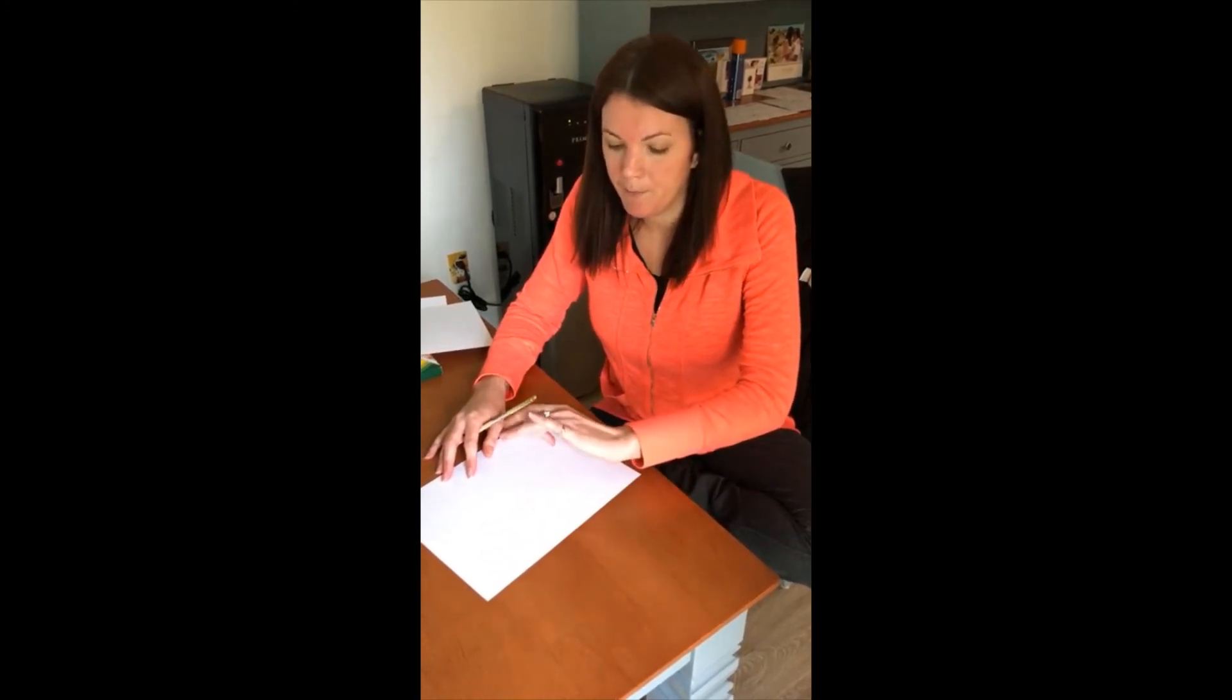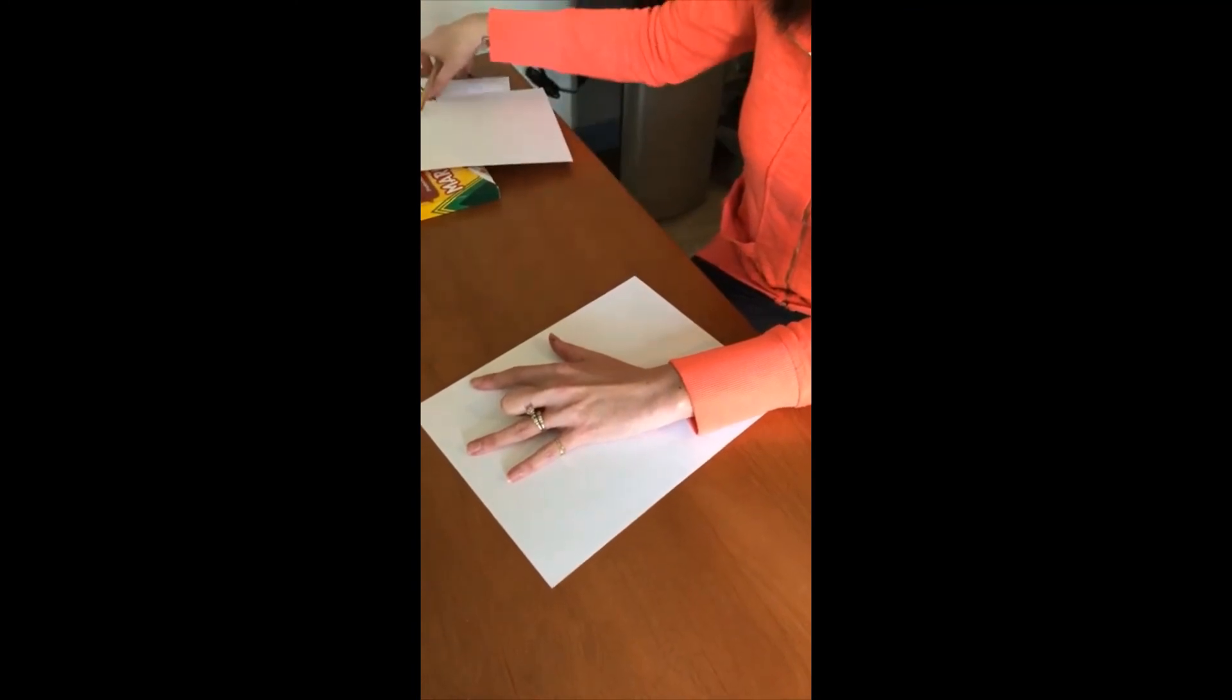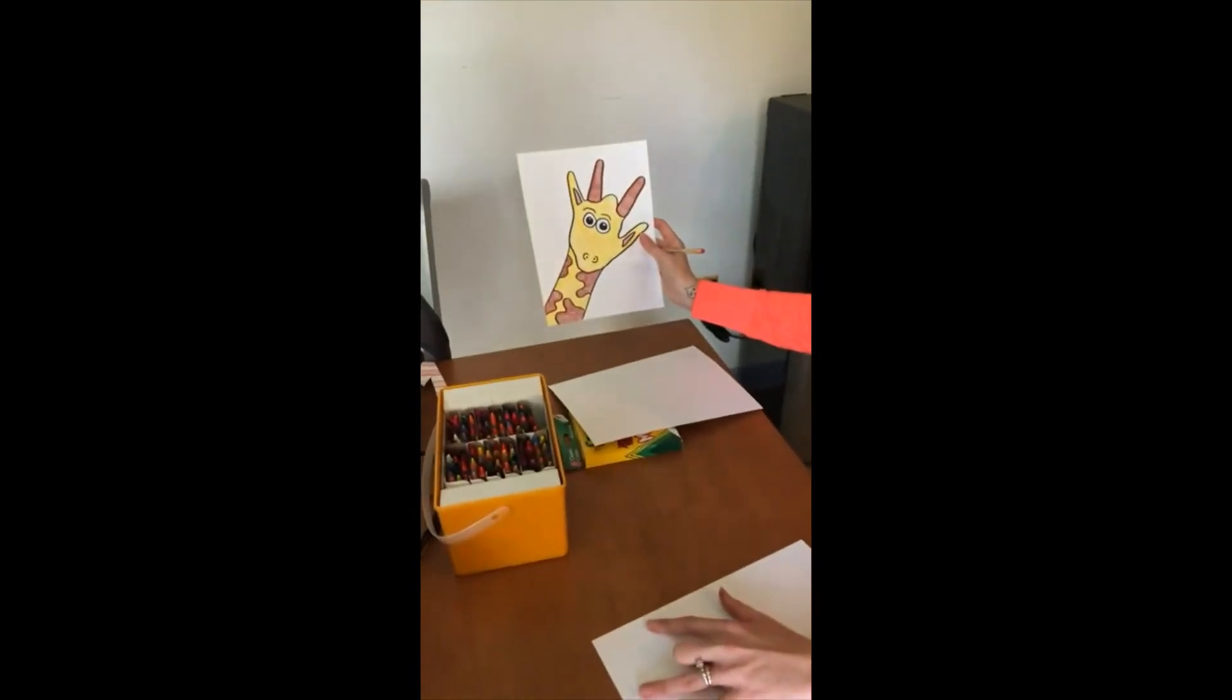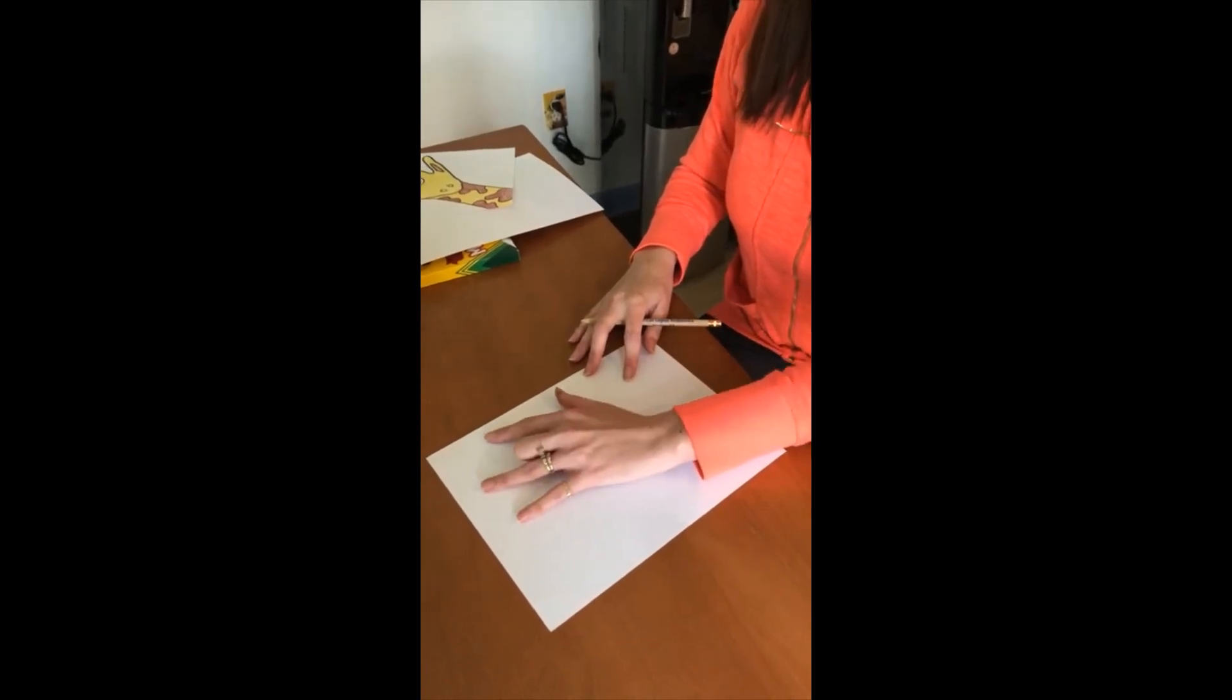Now I'm going to teach you how to draw a handprint giraffe. I'm going to bend down my middle finger and put my giraffe on the side, going sideways diagonal on the paper. You could do it like this if you'd rather your giraffe go in that direction.